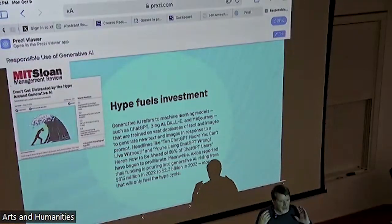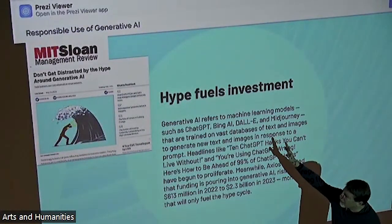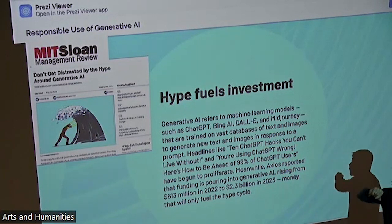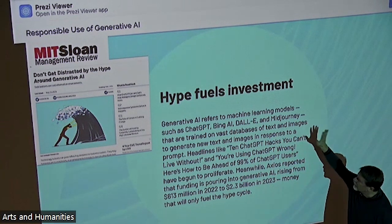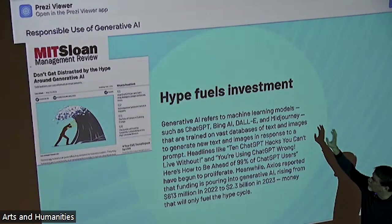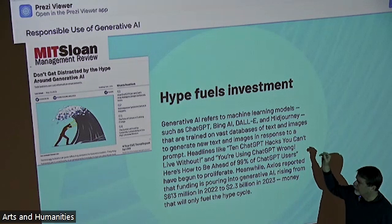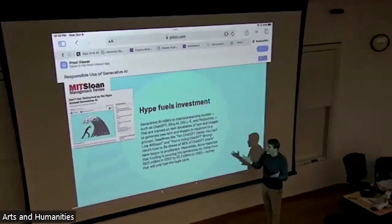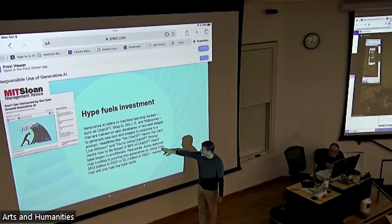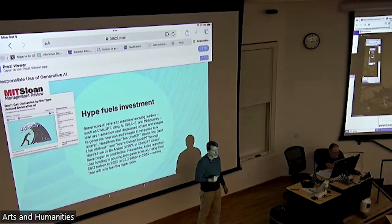This kind of hype — I could literally go on for the next hour just on the hype. Those are just two of my favorites. This hype is fueling an investment opportunity, or bubble — we won't know until the bills come due. This investment is pouring money into various machine learning models such as ChatGPT, Bing AI, DALL-E, MidJourney, tons of others. These are trained on vast databases of text and they generate new text and images. The bottom line: it was $613 million in 2022. This year, it's $2.3 billion. That's a big change.